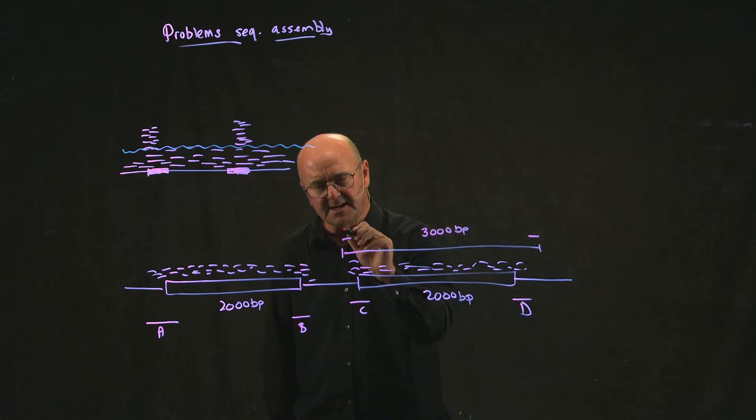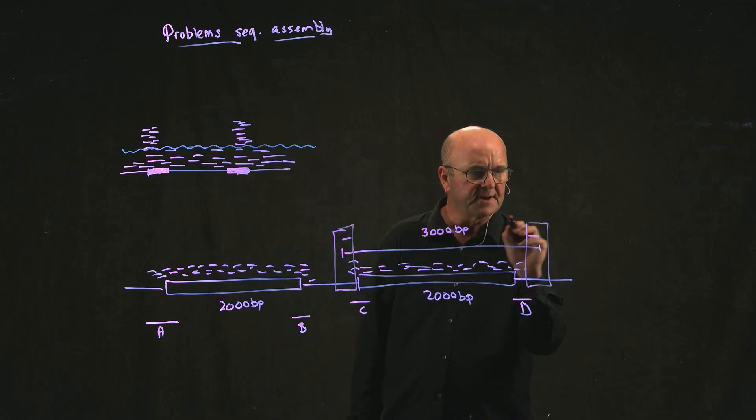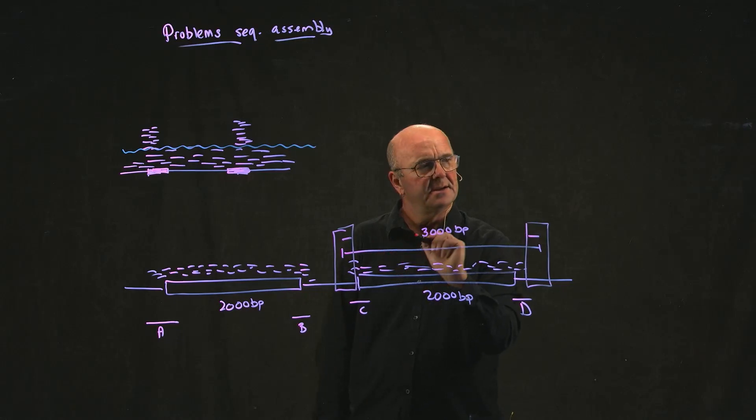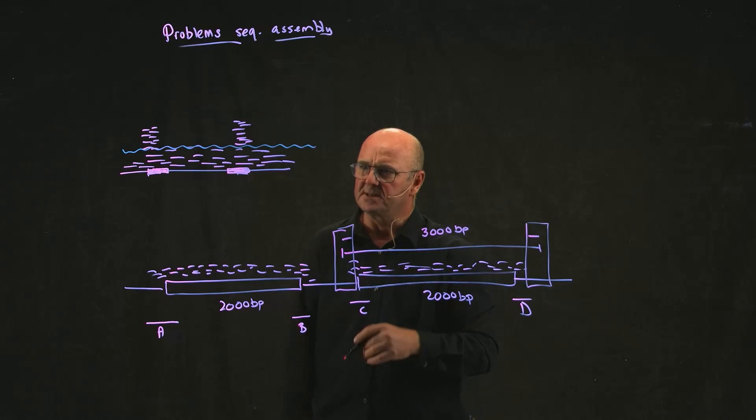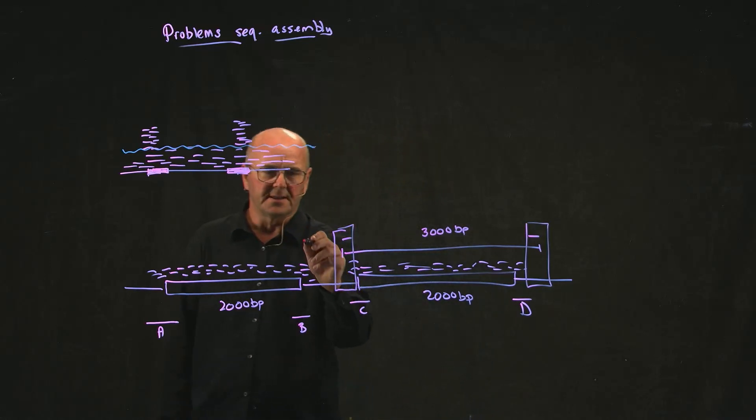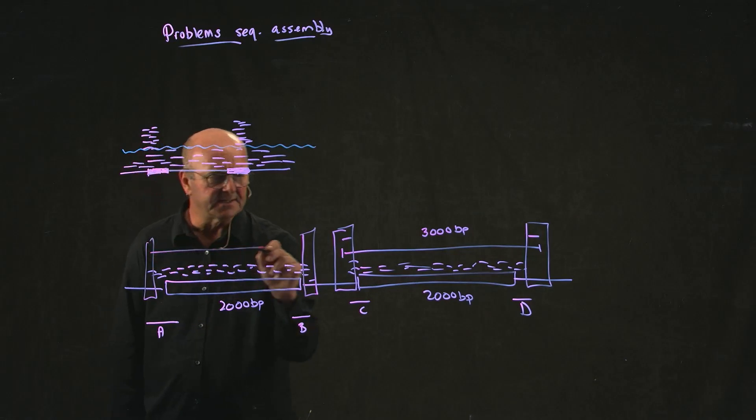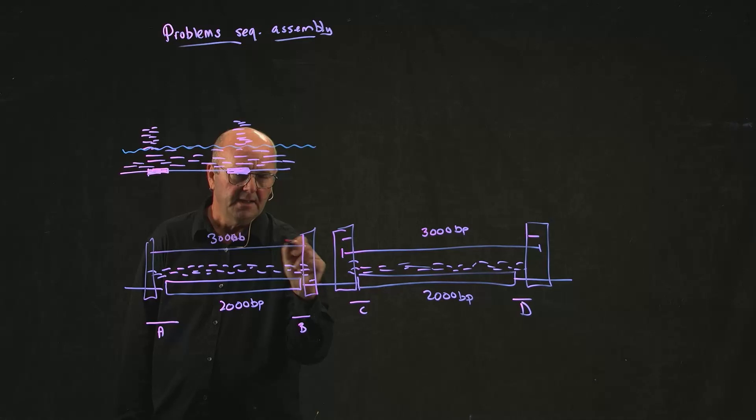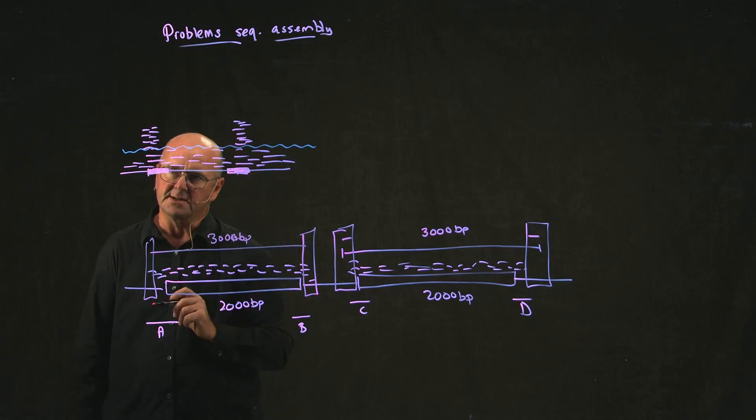When we do the assembly, we can say, aha, I know that this fragment and this fragment are connected because I have a piece of DNA. And I know that they should be about 3,000 base pairs apart because that's the median size of my fragments. And then the same over here as well. I know I've got pieces that are 3,000 base pairs apart, and so I know that these two fragments are connected.